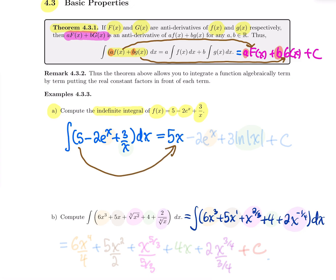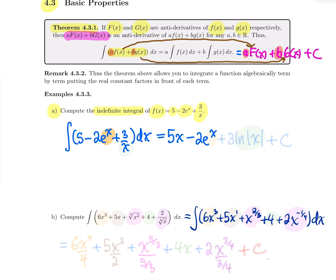If you think about it, the derivative of 5x is 5, which gives back the first term. Now, a primitive for e^x is e^x, so we get minus 2e^x. If you differentiate minus 2e^x, you get minus 2e^x again. What about 3 over x? Since 1 over x integrates to ln of x, 3 over x — just keep the coefficient — gives plus 3 ln of absolute value of x.